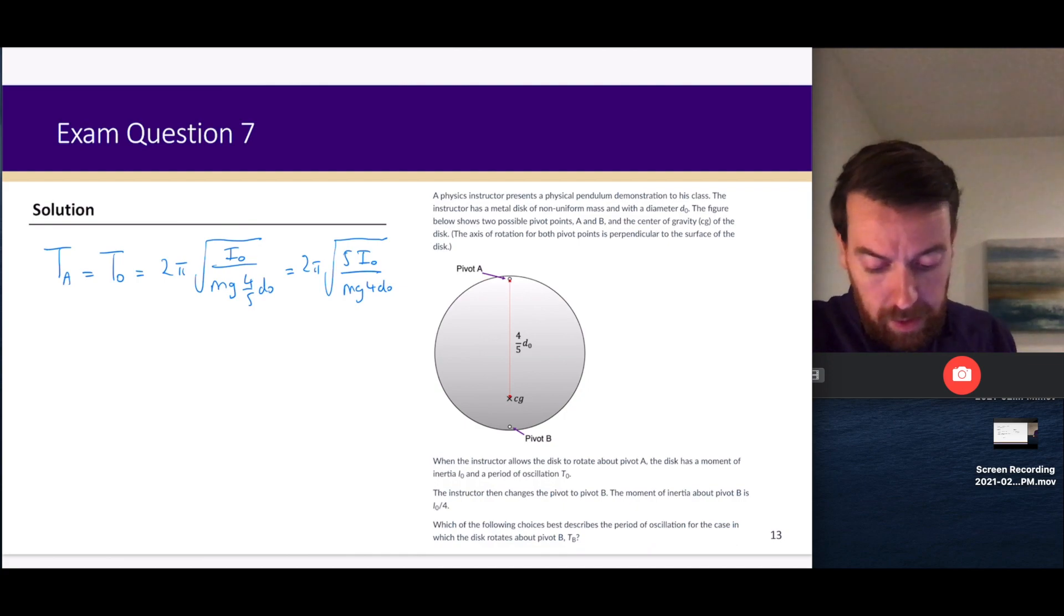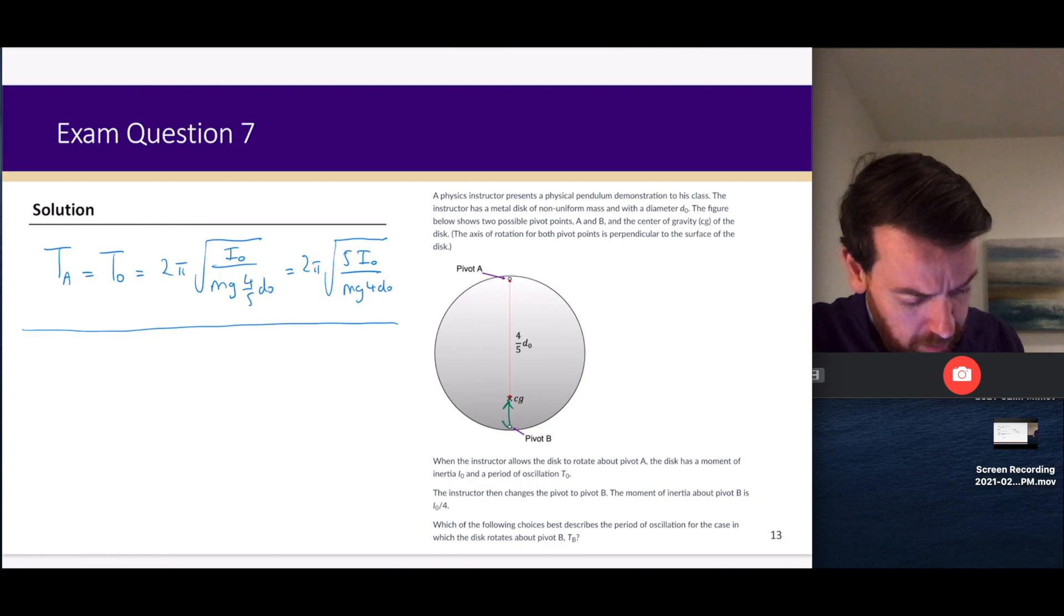Let's switch up the colors here and talk about T_B. We're going to rotate the disc around, and as I mentioned, the key idea here is that the distance d for pivot B is only one-fifth of d₀.